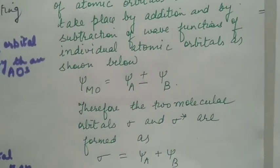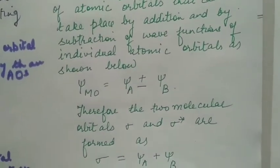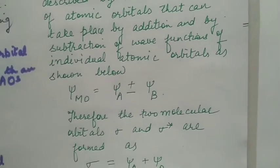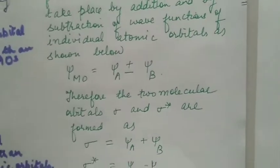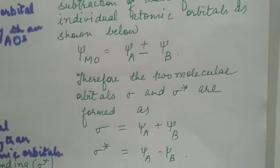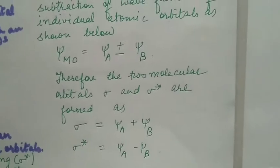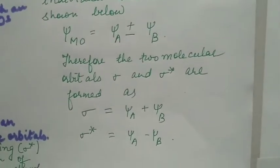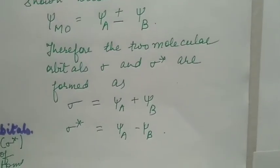The amplitude of molecular orbital ψ_MO will be ψA plus or minus ψB. Two molecular orbitals, sigma and sigma star, are formed. Sigma is formed by addition of the wave functions.